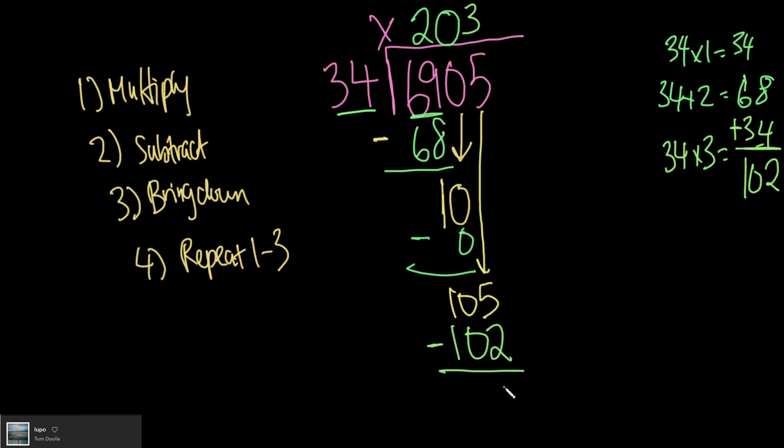105 minus 102. Again, 5 minus 3 here is just 3, and 10 minus 10 is 0. So my answer here is 203, and this 3 here is actually my remainder. So I can say my answer here is 203 remainder 3.